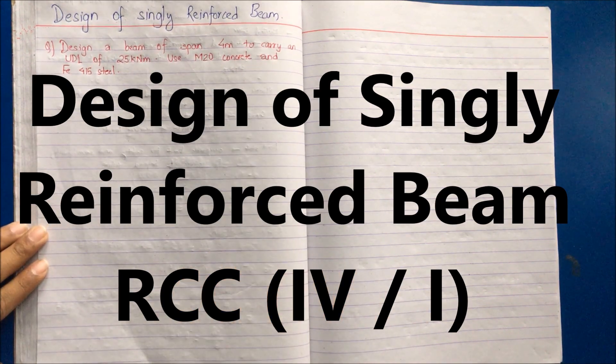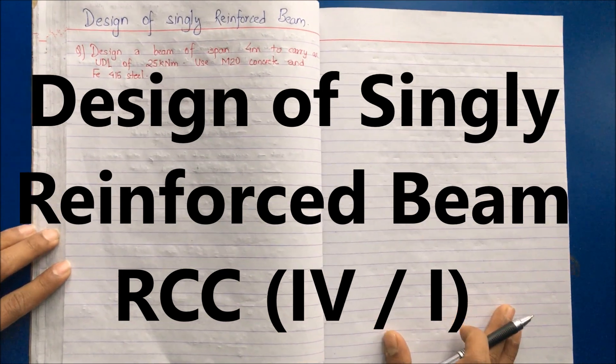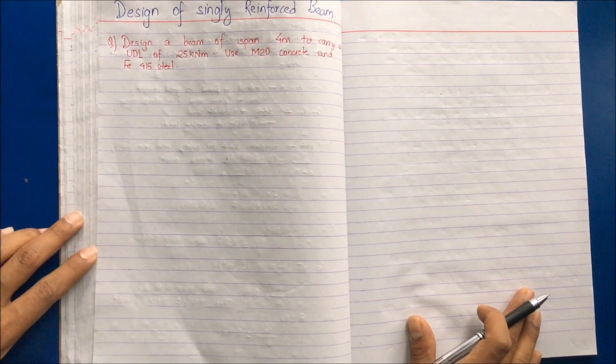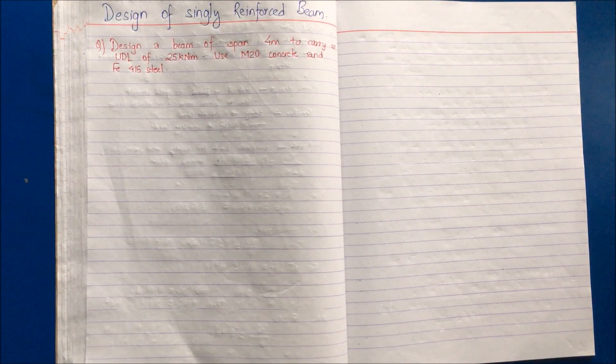Welcome to another video on video series of RCC. In this video, we will be discussing about the design of a singly reinforced beam. As we know, a singly reinforced beam is such type of beam in which the reinforcement is provided in the tension zone only.